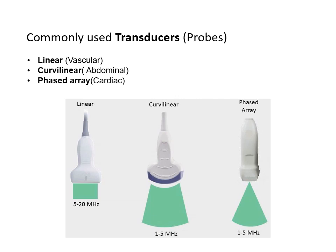There are three commonly used probes in acute settings. The first is the linear probe, which has a flat face and the highest frequency. The second is the curvilinear probe, which has a curved face. The third is the phased array probe. The curvilinear and phased array probes have slightly lower frequency compared to the linear probe. Lower frequency probes are used for deeper structures such as abdomen, aorta, or heart, while the linear probe with high frequency is used for superficial structures such as nerves, tendons, IV access, and foreign bodies.